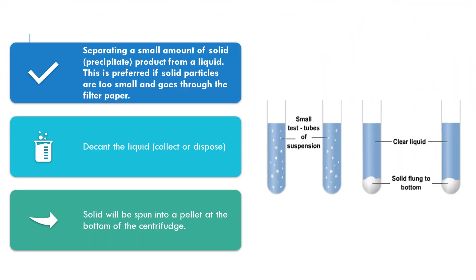A centrifuge is used to separate suspended fine particles from a liquid. The supernatant liquid can be collected by decanting the top layer of liquid after centrifuging. The solids will settle at the bottom of the centrifuge tube as a pellet.